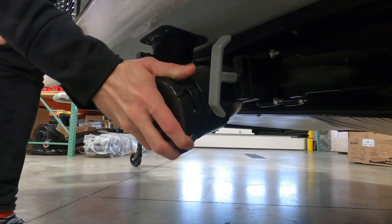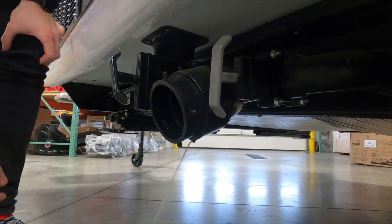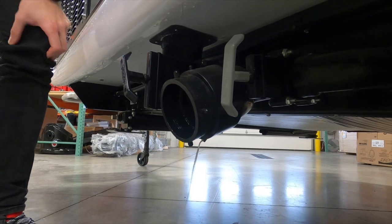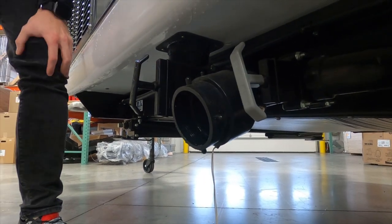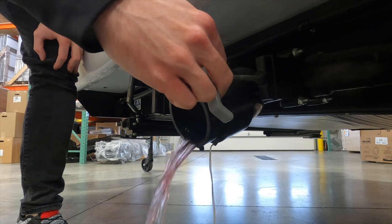You'll then want to empty the black tank. It's best to do this at a dump site using a sewer hose. Then open the gray tank to let any excess water drain out. Once it's empty, close it back up.